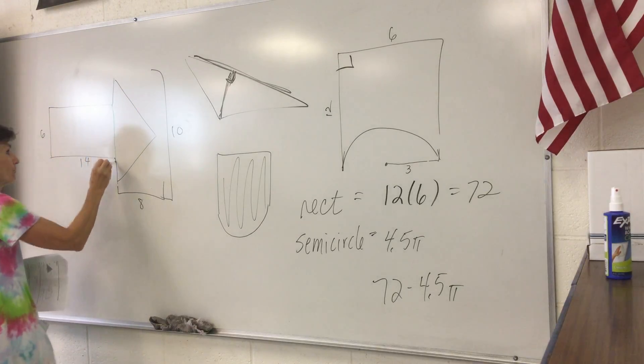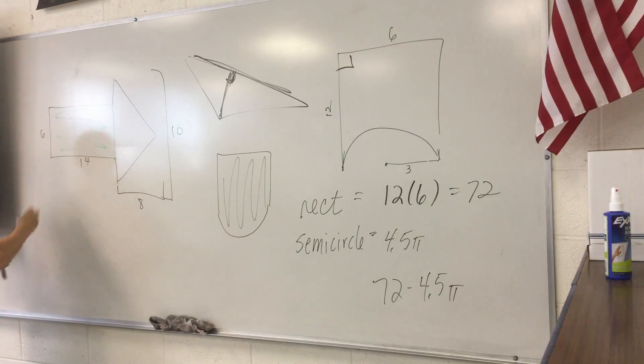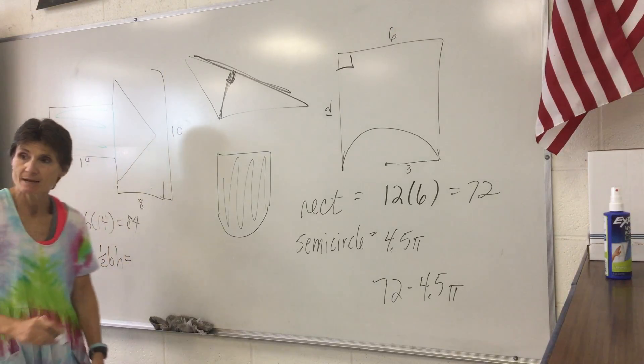So, I'm going to look at my rectangle first. So, here's my rectangle. And that area is easy. The area of the rectangle would be 6 times 14. What is that, 84?